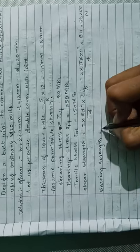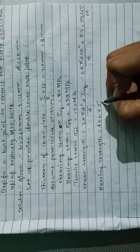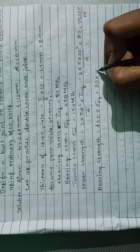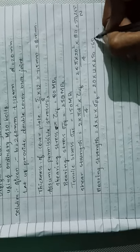The formula is d into t into sigma_pf. What is the diameter? 20 into thickness 12 into 250, that will be 60,000 Newton.